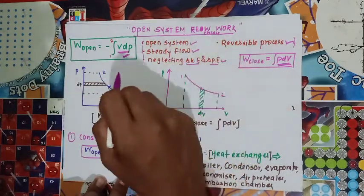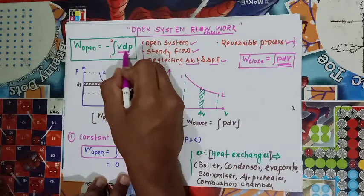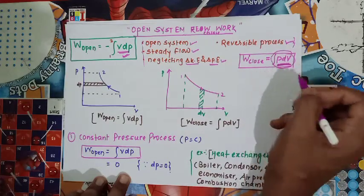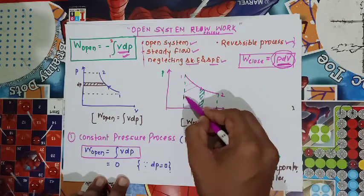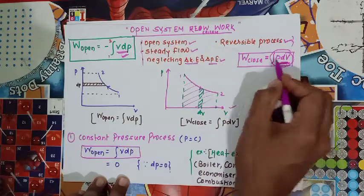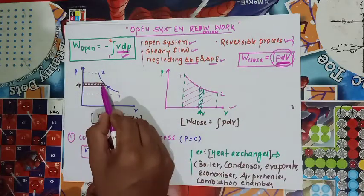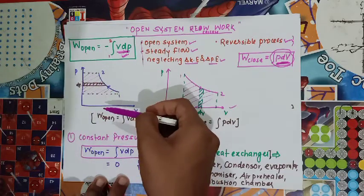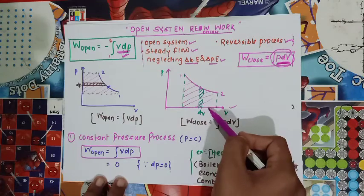To revise: the reversible work for open system is integration of VdP, while for the closed system the displacement work is integration of PdV. For the closed system, work is the area under the curve projected on the volume axis. For the open system, work is the area under the curve projected on the pressure axis.